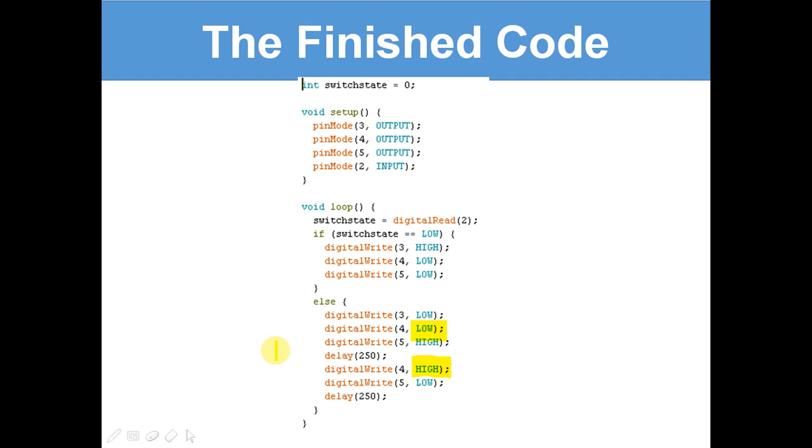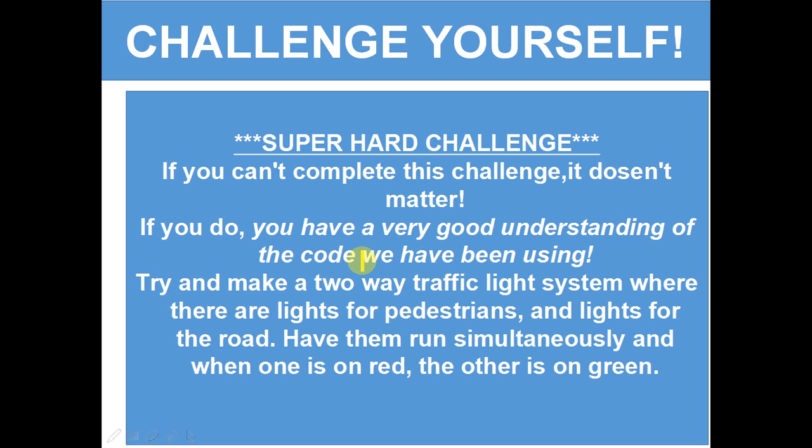We're declaring pinMode 3 as an output, pinMode 4 output, pinMode 5 output, and pinMode 2 input. And then here, void loop. switchState equals digitalRead 2. So the switchState is whether there is electricity running through pin 2 or not, depending if the button's pressed. If it's LOW, then just put the green one on. If it's on, then do first the red at the top, then the amber, and then it goes back to green.